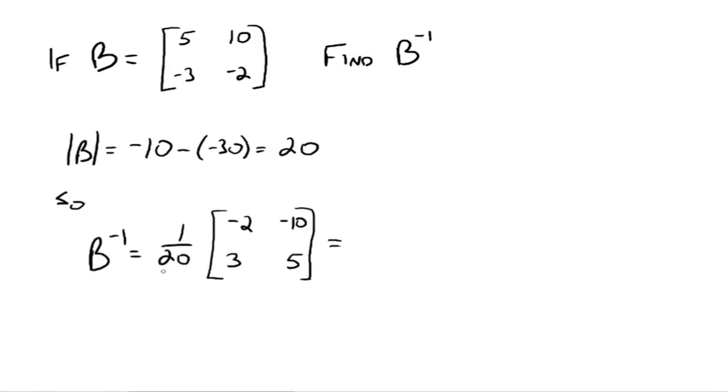So then we run 1 over 20 through, because it's just a scalar, so multiply it times everything inside the matrix there, and you get negative 1 tenth, negative 1 half, 3 twentieths, and 1 fourth. And that is B inverse. If you were to take B and B inverse and multiply them together, you would get the identity matrix back. I'll leave that for you guys to play with. But that's what would happen.